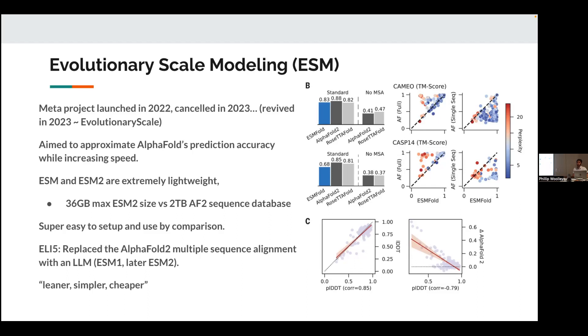So what they did in effect was they replaced the multiple sequence alignment with the large language model. So you're sort of just embedding the patterns of multiple sequence alignment into the learned patterns in the LLM. It's extremely lightweight by comparison. The largest ESM2 size is 36 gigabytes. Tiny by comparison of the AlphaFold2 sequence database. And I've set it up. It takes like no time at all. It's really fast, super easy to use. It's been described as leaner, simpler, cheaper. These are some statistics that came out to try, or sorry, I keep on using the mouse on here thinking it shows up on here. Here are some statistics that they used to try to prove ESM comparability to AlphaFold. However, notably it's not as accurate. So you do take that hit in accuracy, despite being super fast and super lightweight.